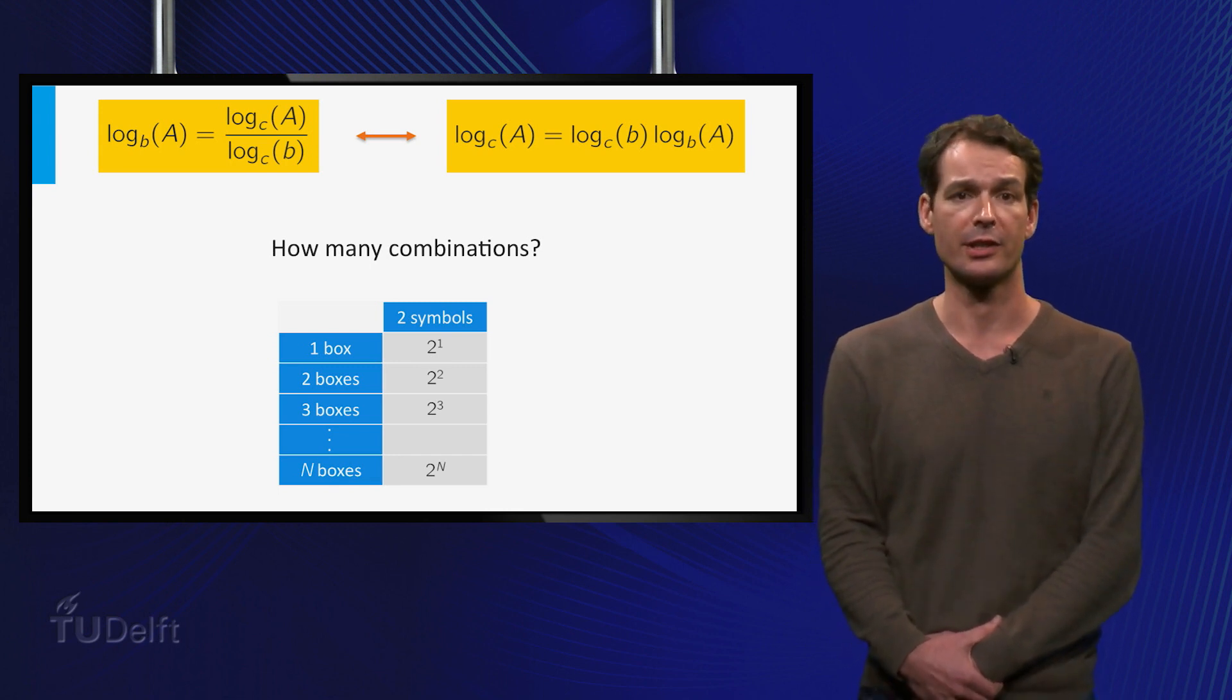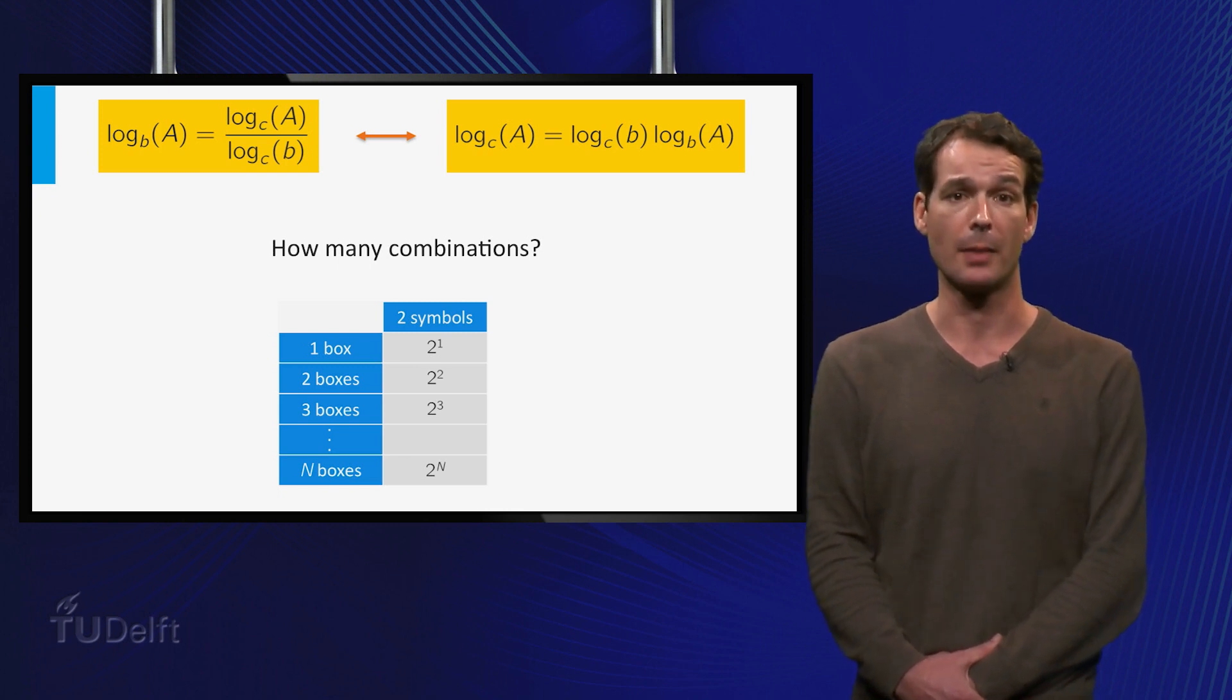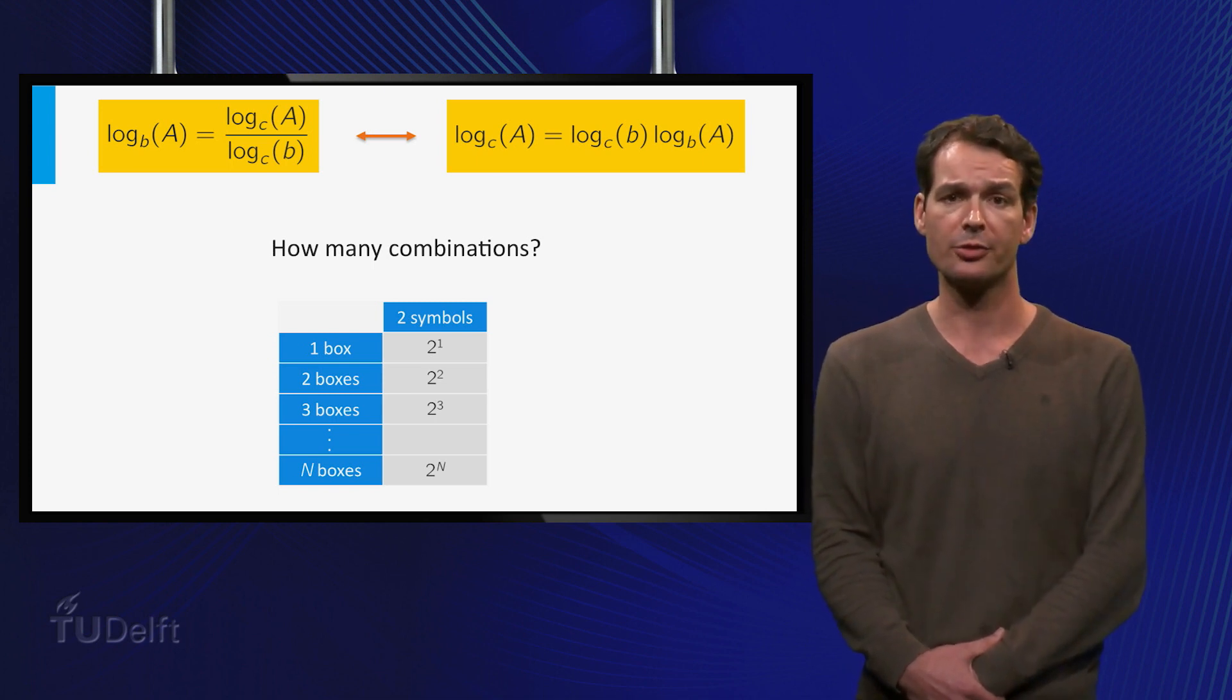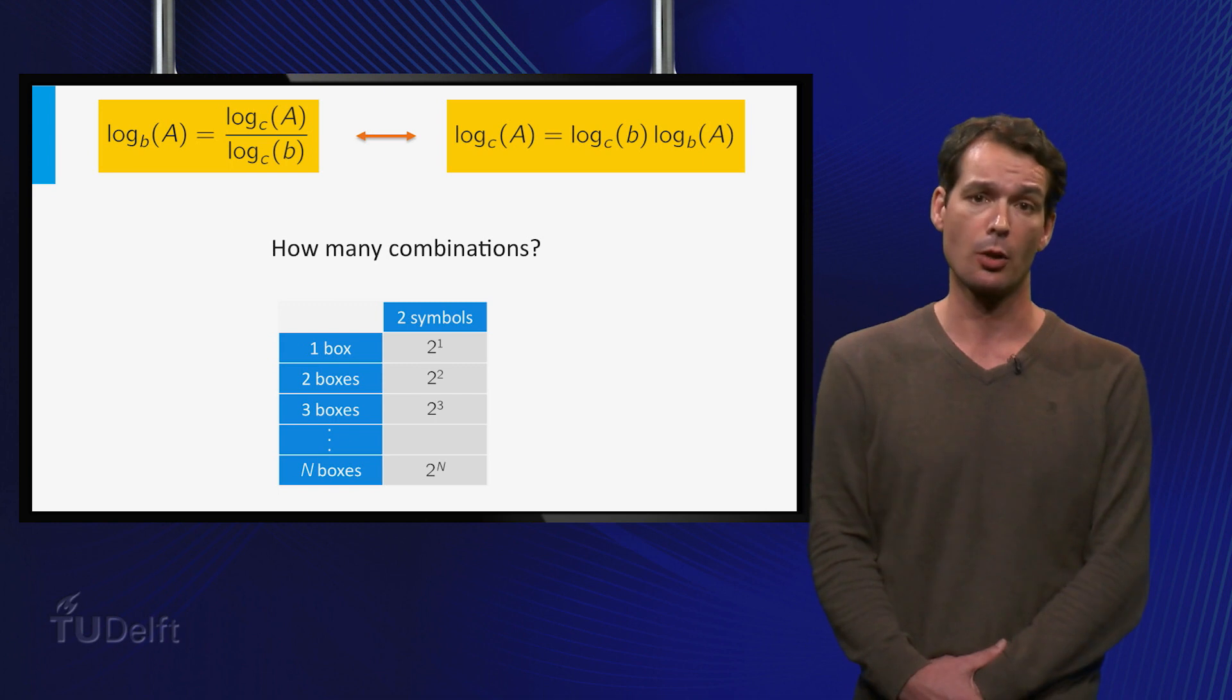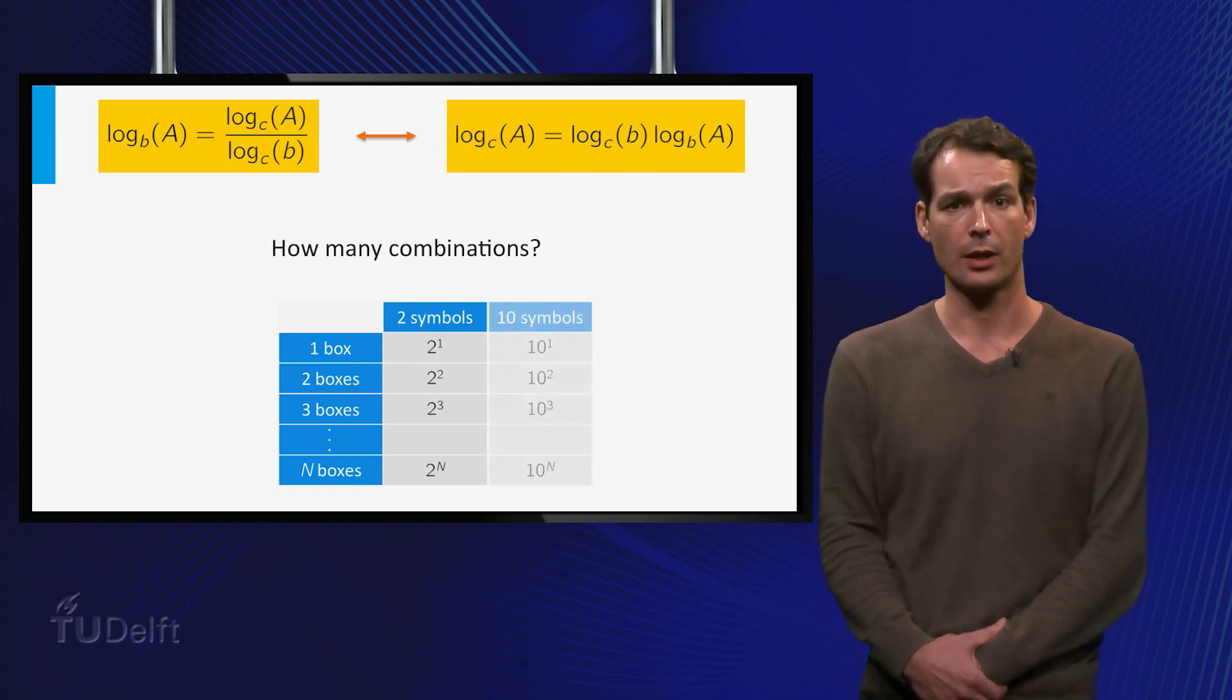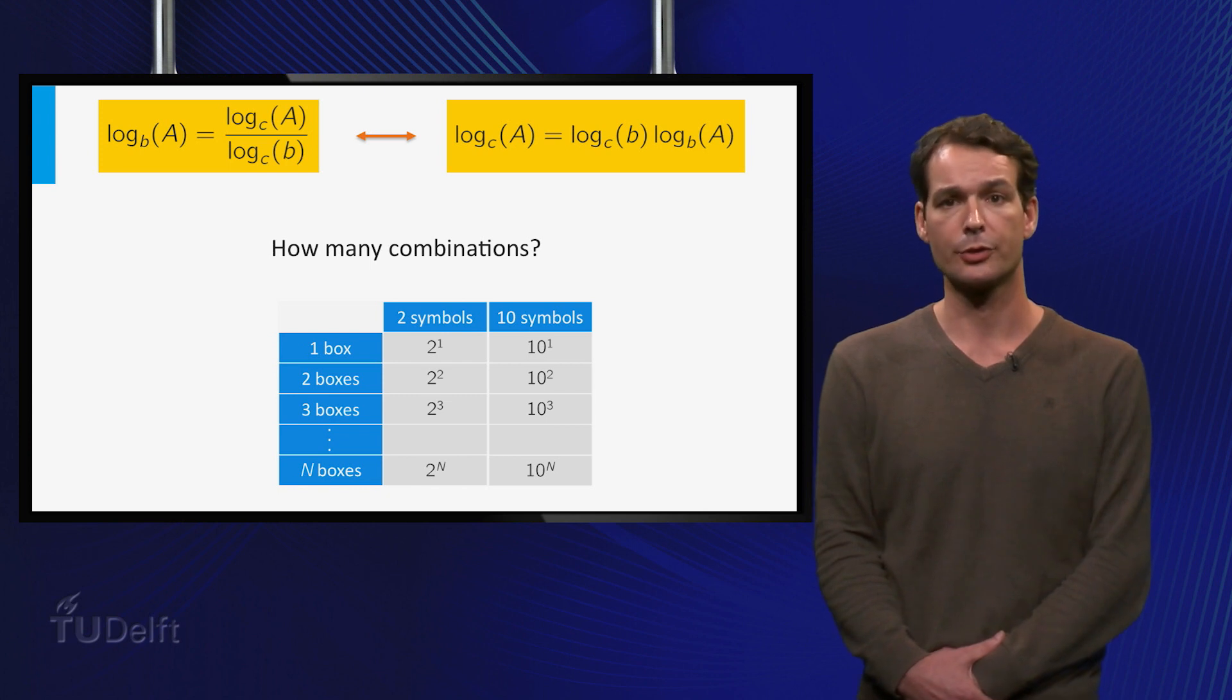So far we considered how many combinations we can make with a given number of boxes. That is, if we have N boxes, which can all contain two symbols, namely 0 and 1, how many combinations can we make? Let's say we have 10 symbols now, 0, 1, 2, up to 9. How many combinations can we make in this case?